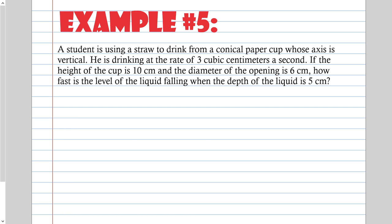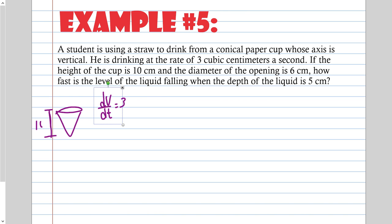Example 5. A student is using a straw to drink from a conical paper cup whose axis is vertical. He is drinking at a rate of 3 cubic centimeters per second — cubic means volume, so dV/dt is 3. If the height of the cup is 10 centimeters and the diameter of the opening is 6 centimeters — so radius is 3 — how fast is the level of the liquid falling when the depth of the liquid is 5 centimeters?